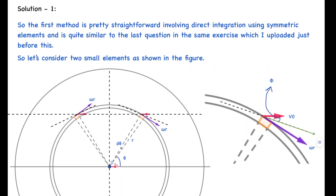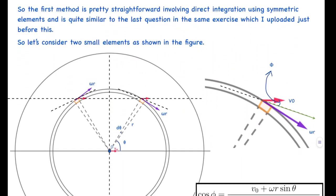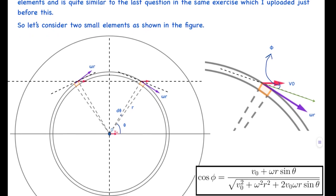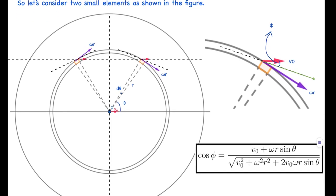Now let's look at the solution. The first method I'll use is direct integration, which is very similar to the last question. This involves direct integration using symmetric elements and is quite similar to the last question. Let's consider two small elements as shown in the figure. I assume the disk is moving in the x-direction with velocity v-naught and rotating in a clockwise sense with angular velocity omega-naught.